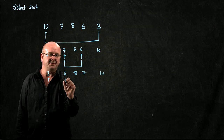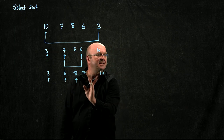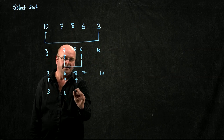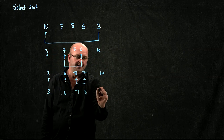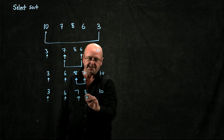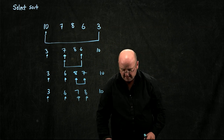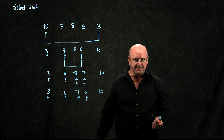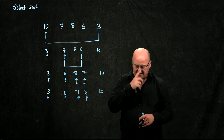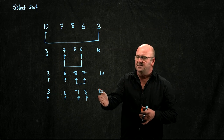Now we're done with position 0 and position 1, we go to position 2. We go through the list and we find the smallest thing in the list and we swap it with the thing at position 2. We do the same for position 3, and we do that until we get to the end of the list. We end up with a sorted list.